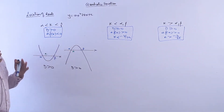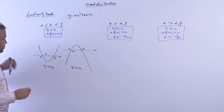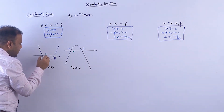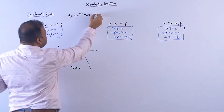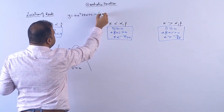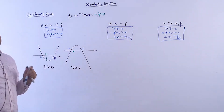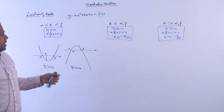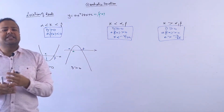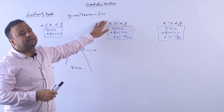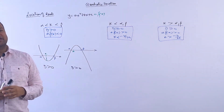Now how to make sure that k is between alpha and beta? If I look at the value of the function at k — because this is y, which we can also say f(x). So f(x) = ax² + bx + c. For example, f(1) = a·1² + b·1 + c, f(2) = a·4 + 2b + c.